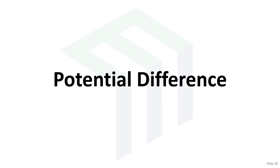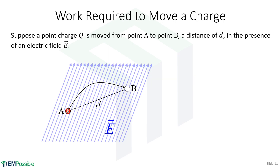Let's say we have some uniform electric field, drawn with faded blue arrows. We have a point charge Q sitting at position A, and we want to move it to position B along some path — curved or straight. It'll take some work because the electric field exerts a force on the charge. The force on the charge is F = QE, so the force is in the same direction as E as long as the charge is positive.